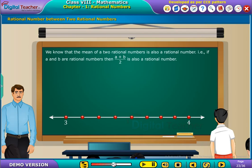We know that the mean of two Rational Numbers is also a Rational Number. That is, if a and b are Rational Numbers, then a plus b by 2 is also a Rational Number.